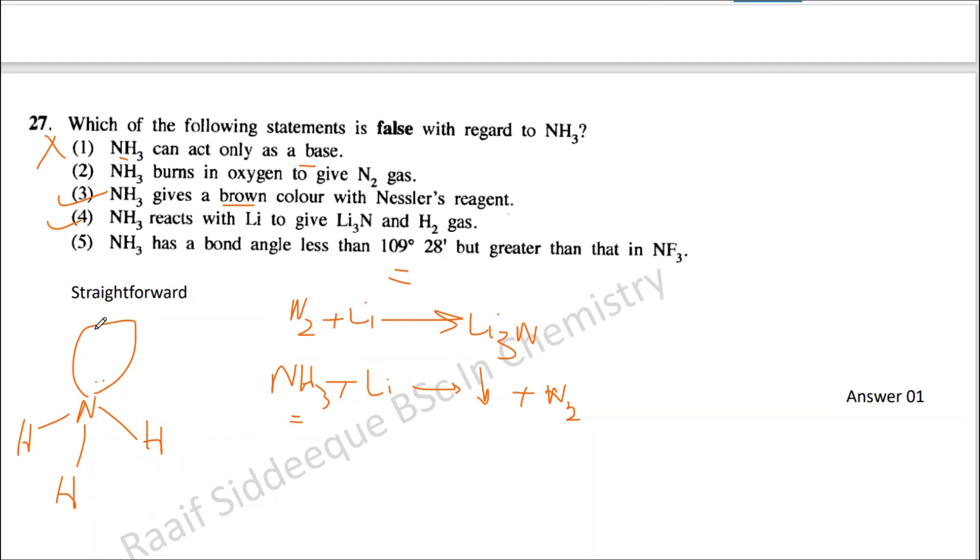Since there is this higher electron-electron repulsion, since the repulsion is greater from these lone pairs, this bond angle is going to be less than that. So that is why they have given less, but it is greater than NF3.